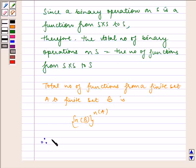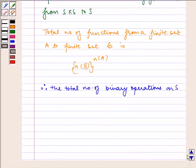Therefore, the total number of binary operations on S is n to the power n squared. That is, for S equals A, B,